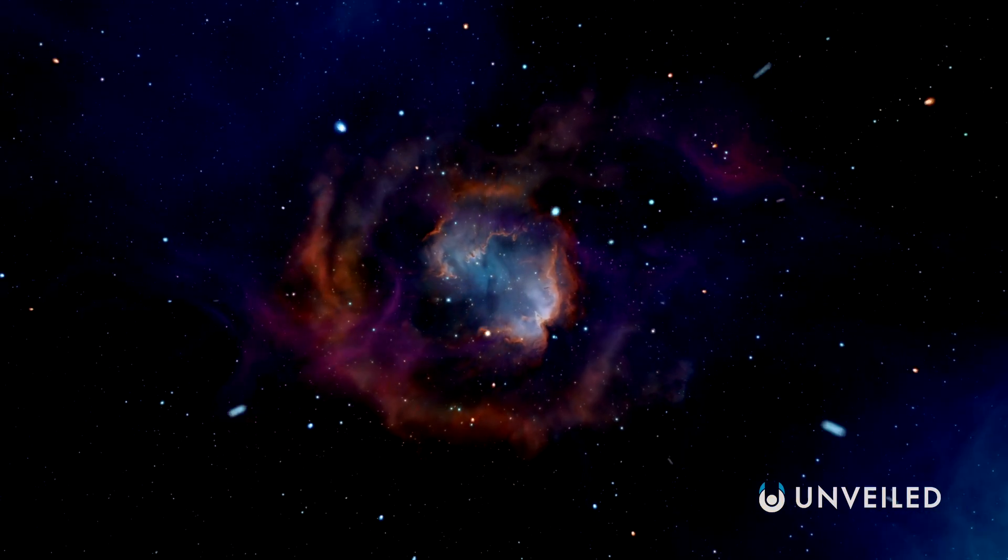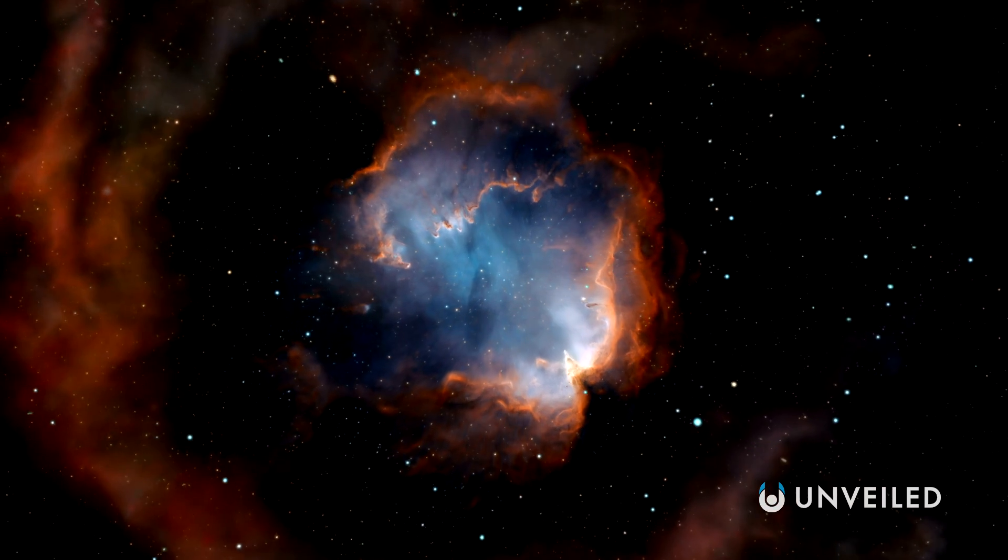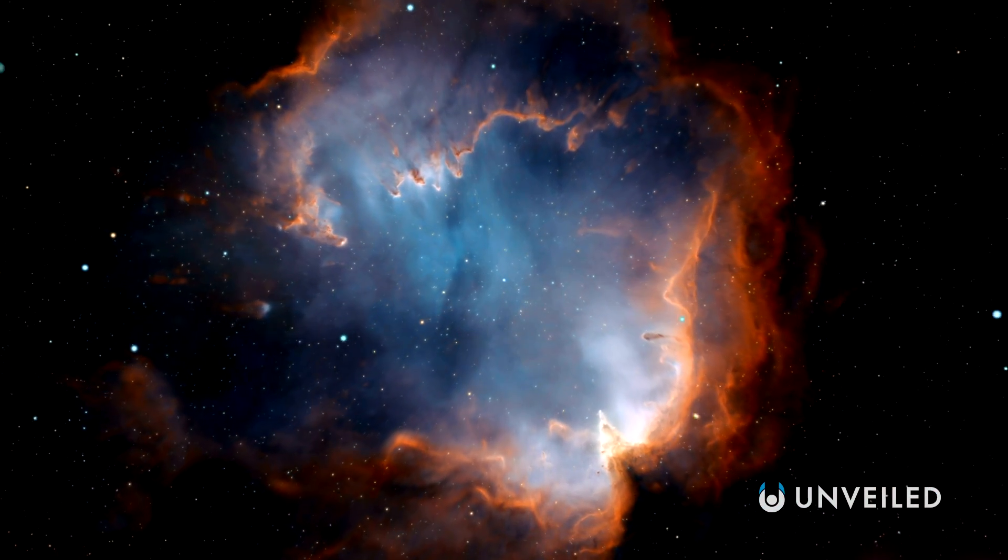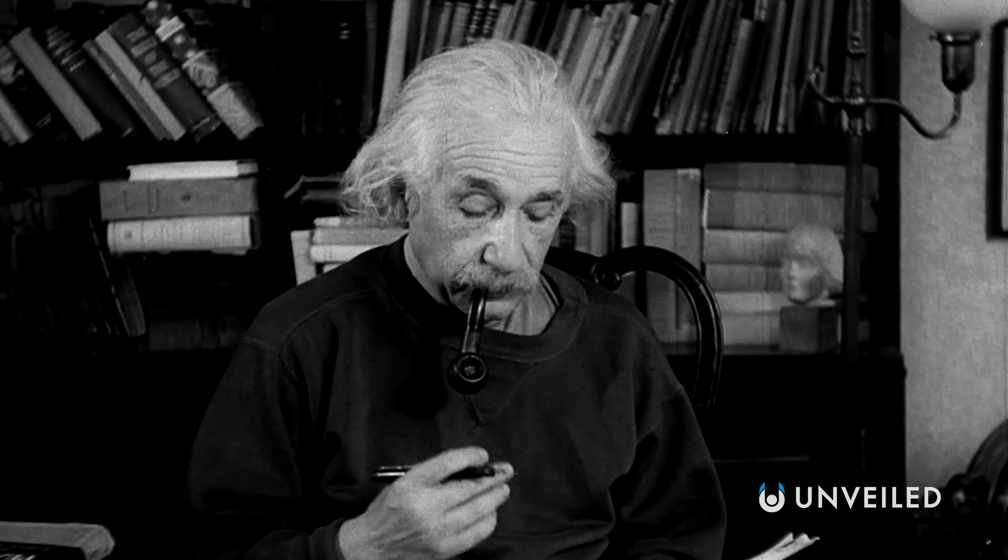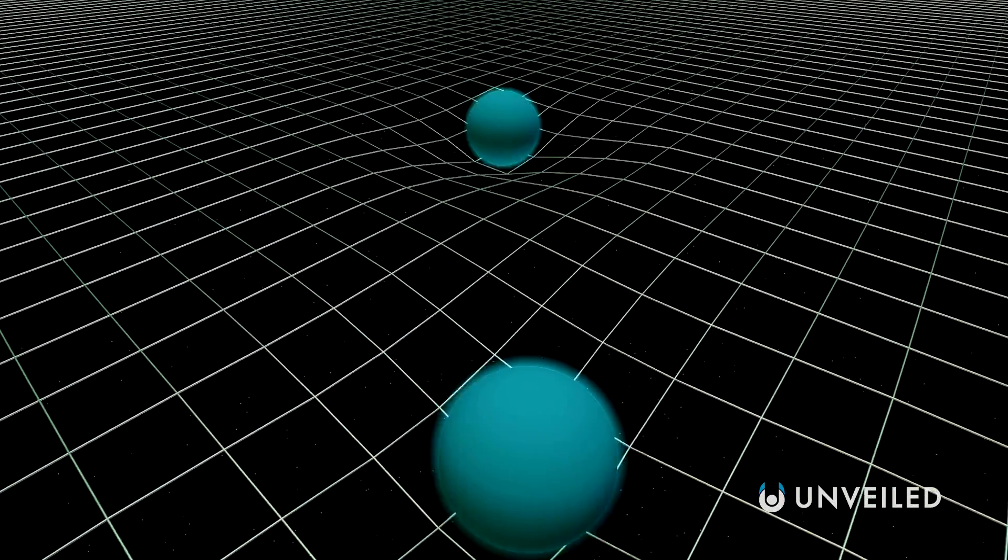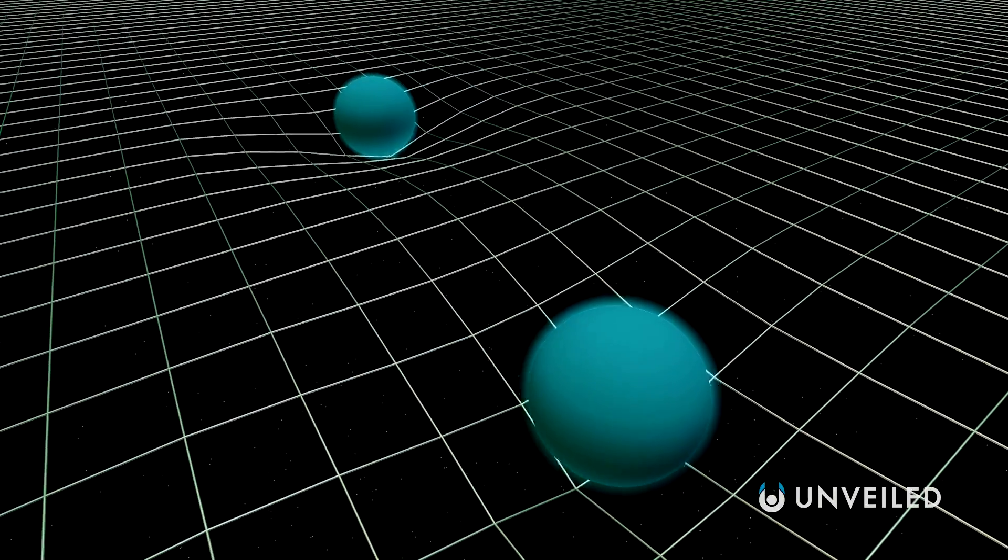But thanks to advancements in our understanding of the world, we can actually calculate the shape of the universe and arrive at a scientific answer for the first time in history. Previously, there was simply no way to know what shape the universe took, but that changed when Albert Einstein introduced his theory of general relativity. General relativity was important because it showed that mass curves the fabric of space.